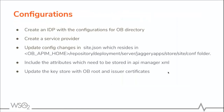The configurations needed for manual client registration are as follows. First, the user must create an IDP with the configurations for the OBIE directory. Then a service provider should be created in WSO2 Identity Server. We also have to update the config changes inside the JSON file which resides inside the API Manager home, repository, deployment, server, jaggery apps, store, site, conf folder. We have to include the attributes which need to be stored in the API Manager XML. Then the keystore should be updated with the OBIE root and issuer certificates.